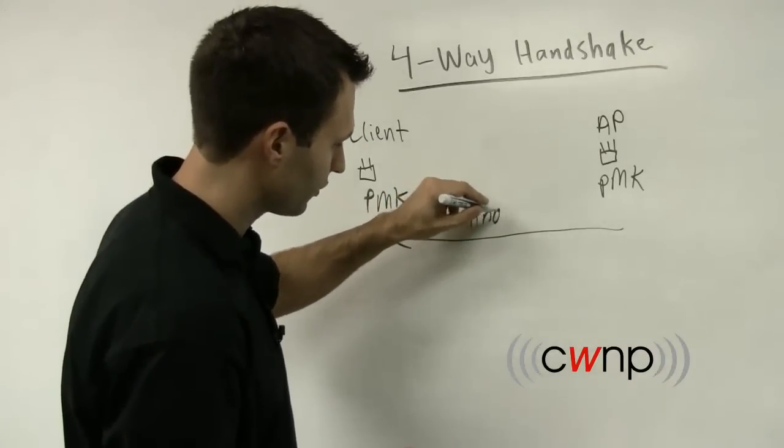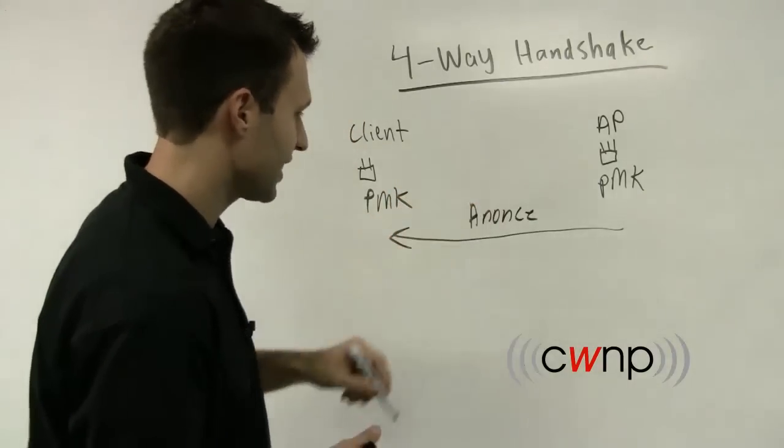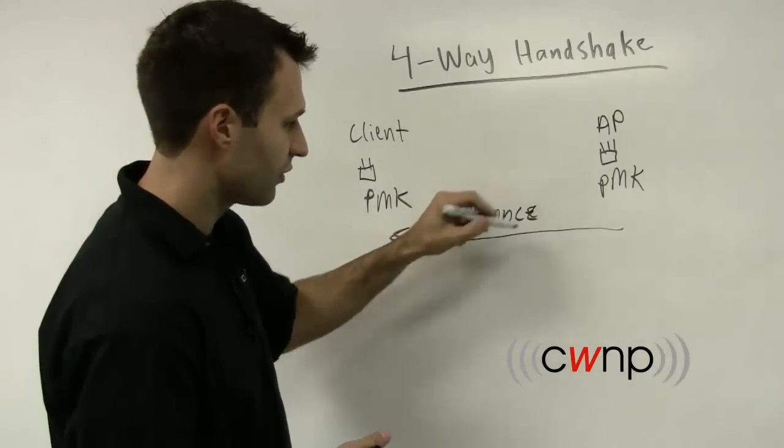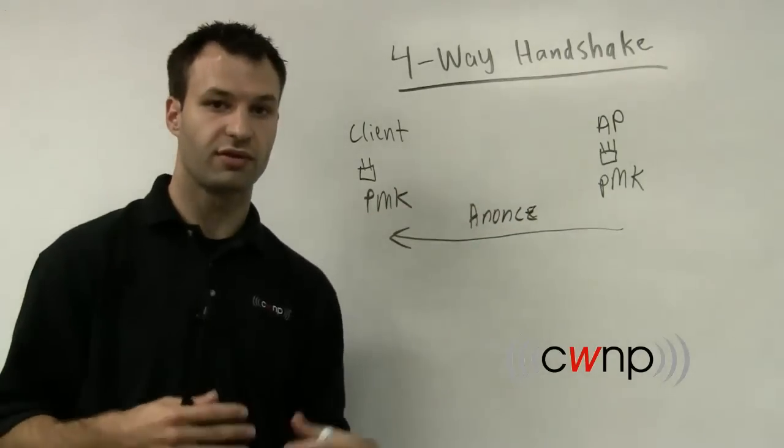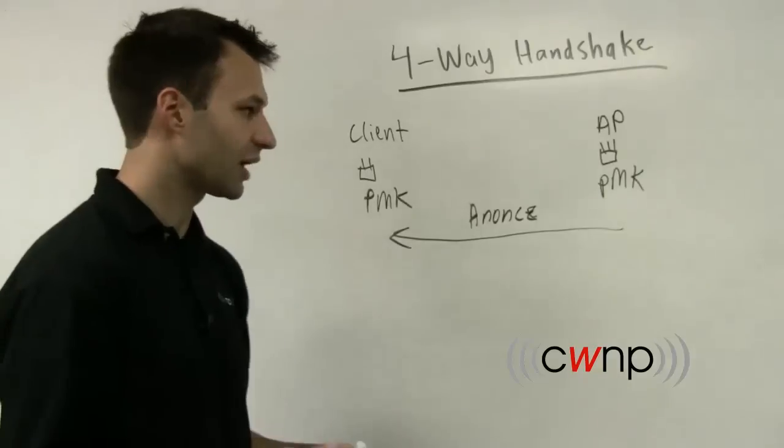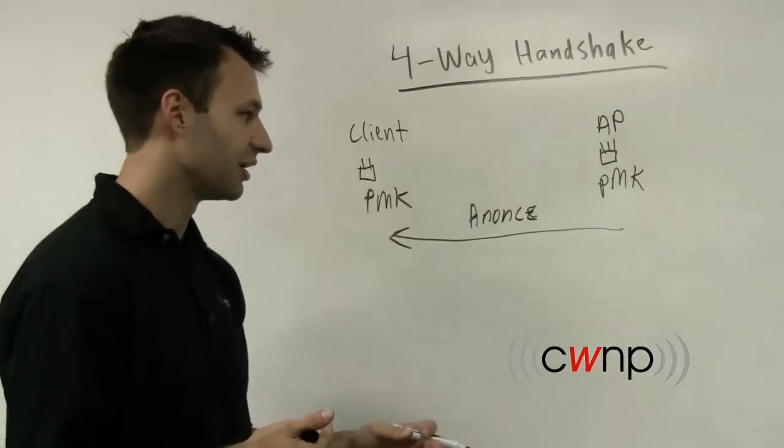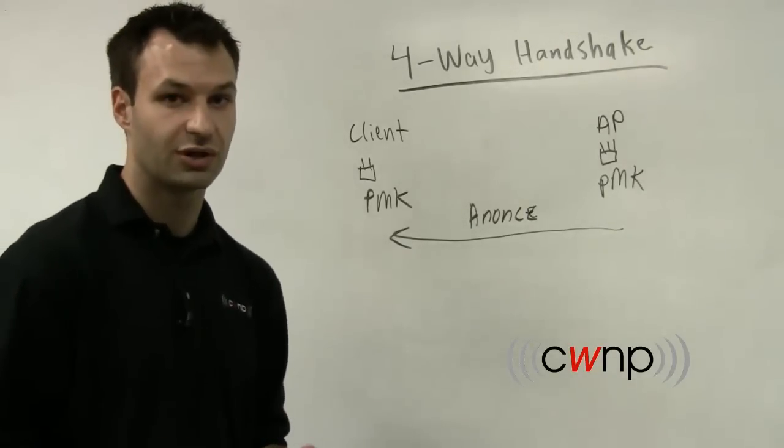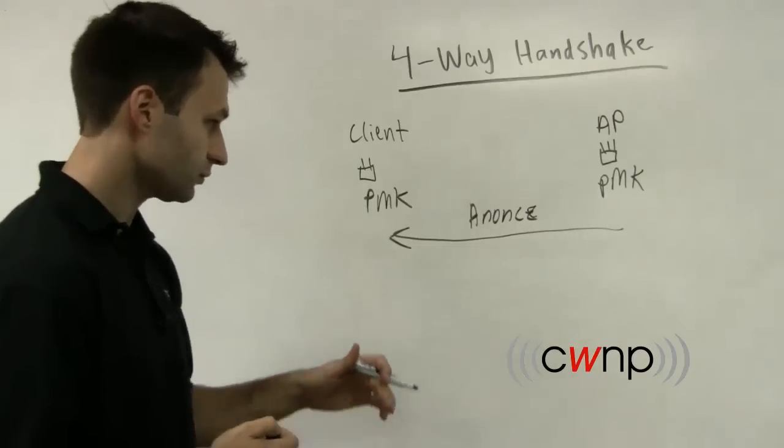And this first frame is going to include something called an authenticator nonce. That is, an authenticator number used once. And this is a randomly generated number, pseudo-randomly generated number, that's going to be used as an input to the encryption keys.